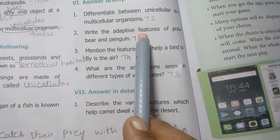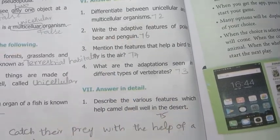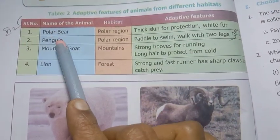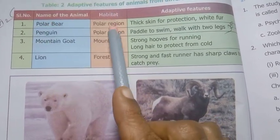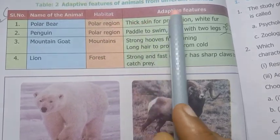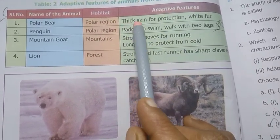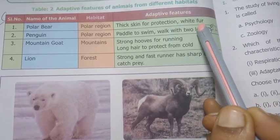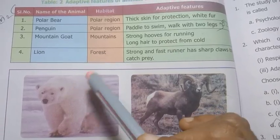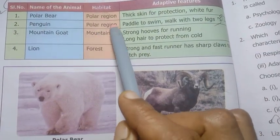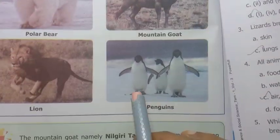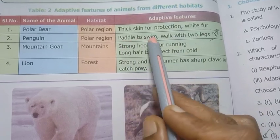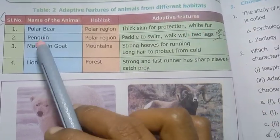Second: write the adaptive features of polar bear and penguin — page number 76. The polar bear lives in the polar region; its adaptive features include thick skin for protection and white fur. For the penguin, which also lives in the polar region: paddle-like feet to swim and walks with two legs — these are the adaptive features of the penguin.